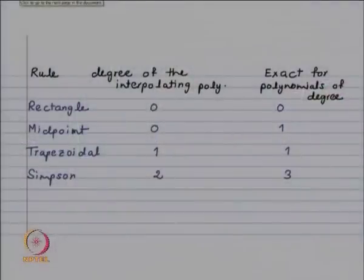For Simpson's rule, we saw that even though we are fitting a quadratic polynomial, there is no error if the function is a cubic polynomial. For the midpoint rule, we were fitting a constant polynomial, but we got exactitude for polynomials of degree less than or equal to 1. Let us look at the comparison of the rules.